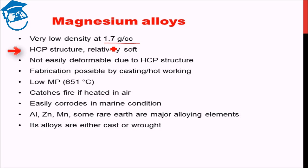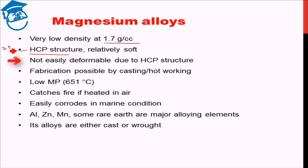Magnesium alloys have a hexagonal close-packed (HCP) structure, and it is a relatively soft metal. The problem is that the HCP structure has effectively only three slip systems, which makes it quite difficult to deform. So magnesium is not easily deformable.